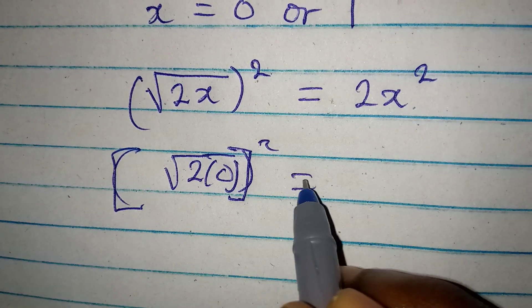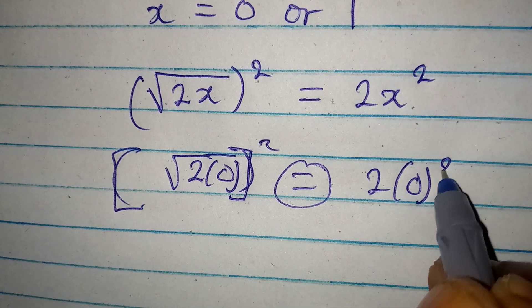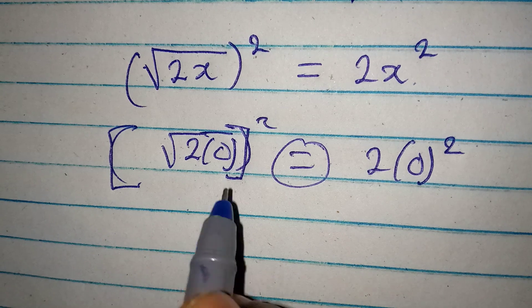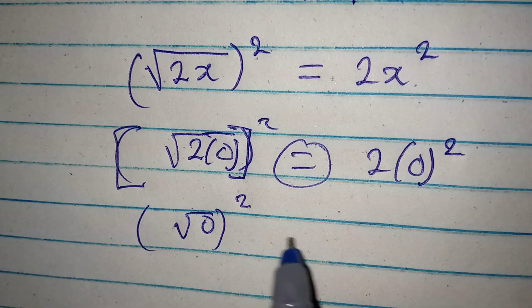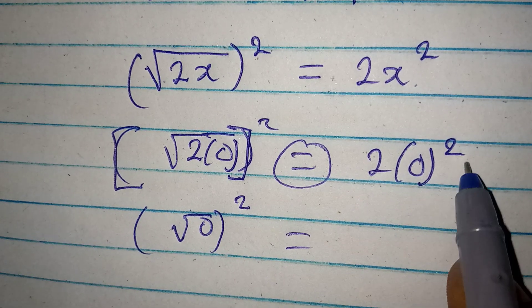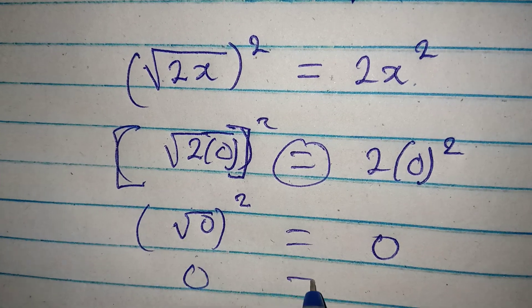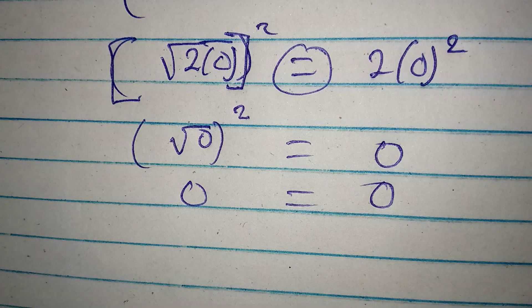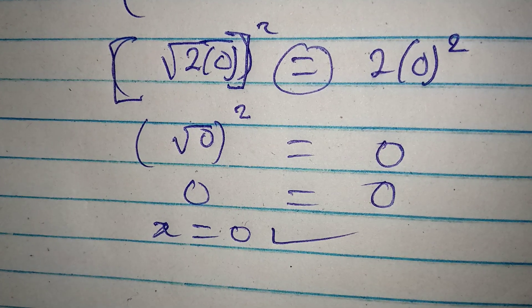Will this be equal to 2 times 0 squared? This means that we have square root of 0, and we're going to square this. On the other hand we have 2 times 0, or 0 squared is 0 times 2, it's still 0. In fact we are having everything 0. This means that x equal to 0 is satisfying the equation.